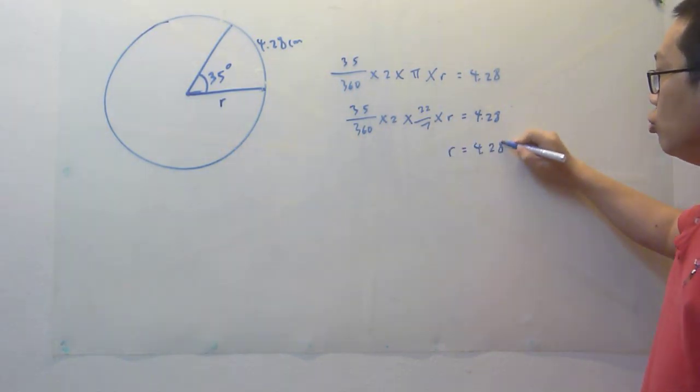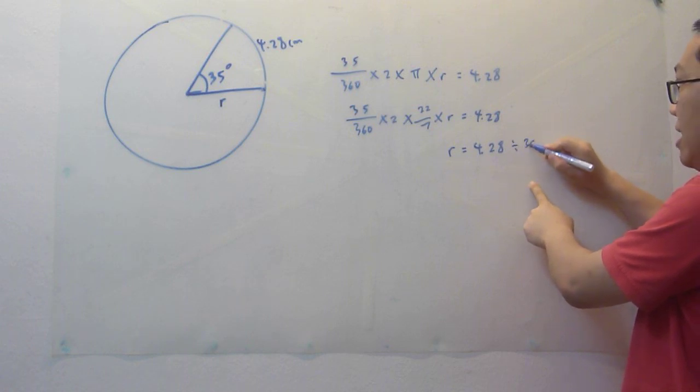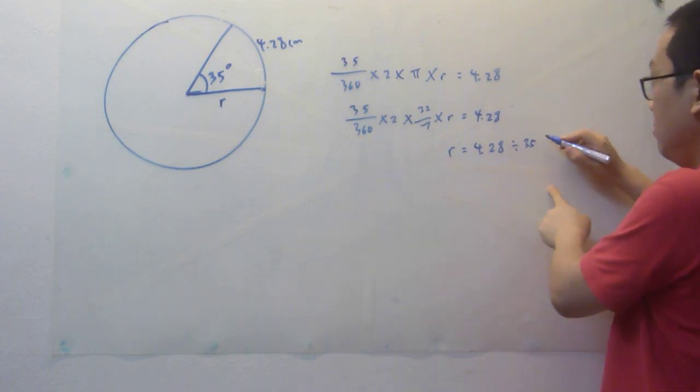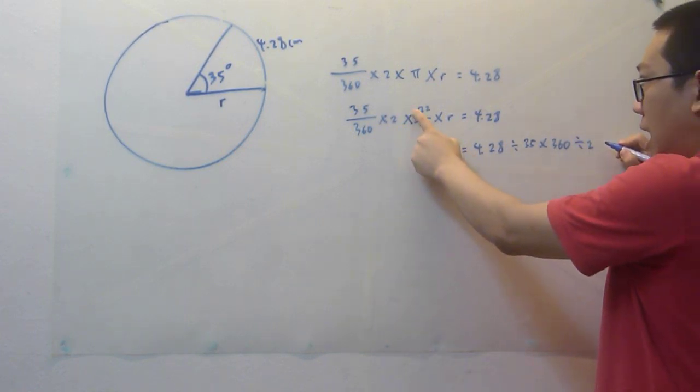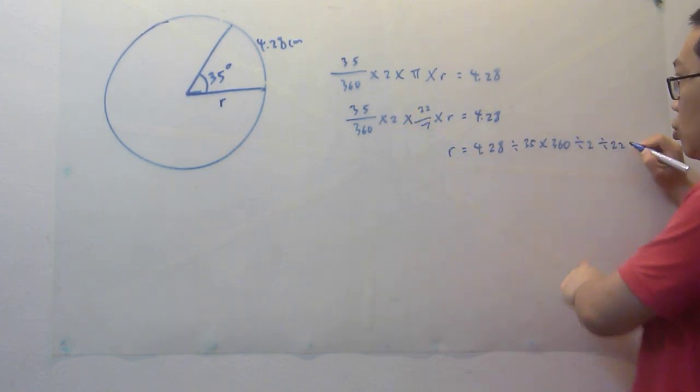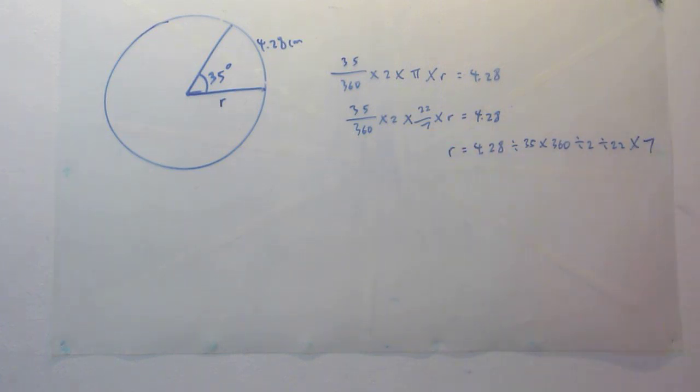Now let's try to solve the algebra. 4.28 times 35 becomes divide 35. Divide 360 becomes times 360. Times 2, divide 2. Times 22, divide 22. And divide 7 becomes times 7.